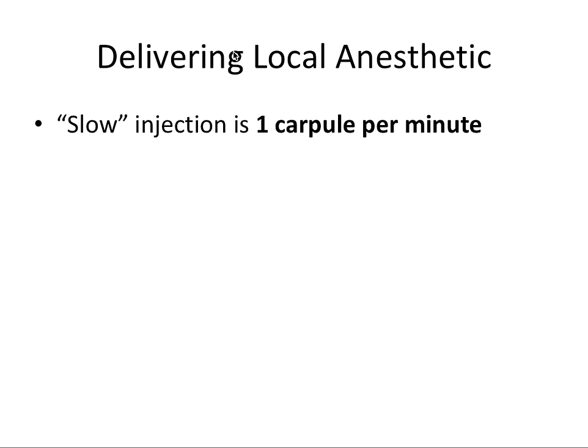The first concept is delivering the local anesthetic. There's the idea of a slow injection being at the rate of one carpule per minute — about 1.8 milliliters of liquid. One carpule per minute is actually really slow, and you may think the patient would rather get it over with. But actually the pressure from the liquid being injected into soft tissue can be one of the most uncomfortable parts, so slow and steady really does win the race.